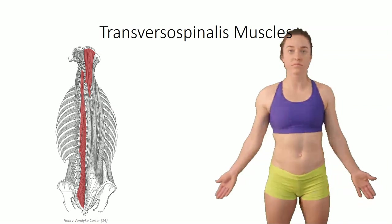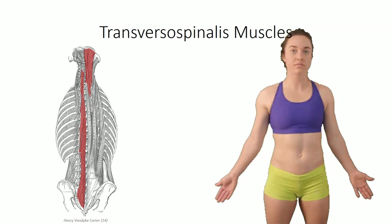The concept of ipsilateral and contralateral rotation may seem daunting at first, but a few minutes in the lab with an articulated skeleton will help clarify this. The rotatoris in particular are thought to have a role in proprioceptive feedback, similar to the serratus posterior muscle group.